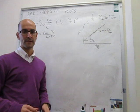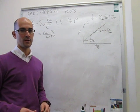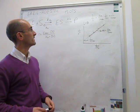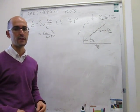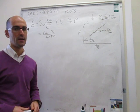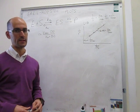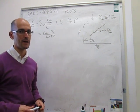The second topic I wanted to talk to you about is a modification of Lineweaver-Burk, which is called the Eadie-Hofstee plot.